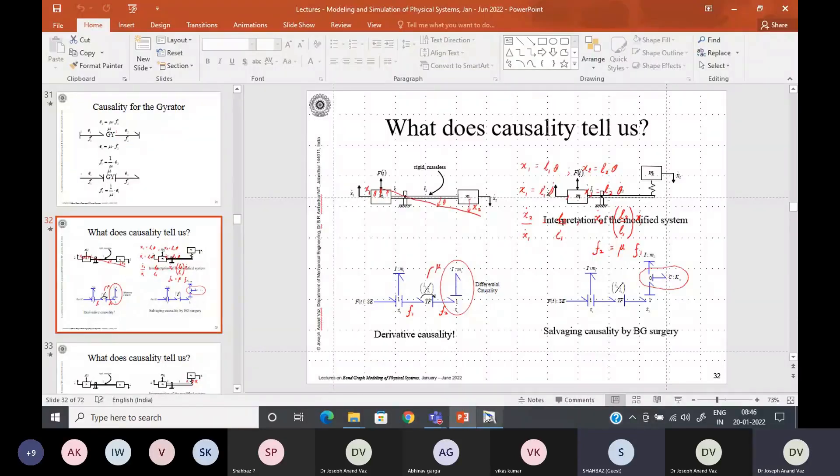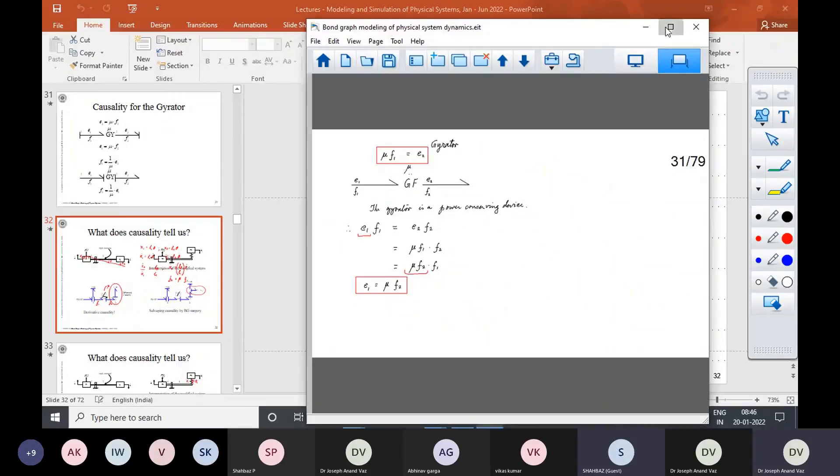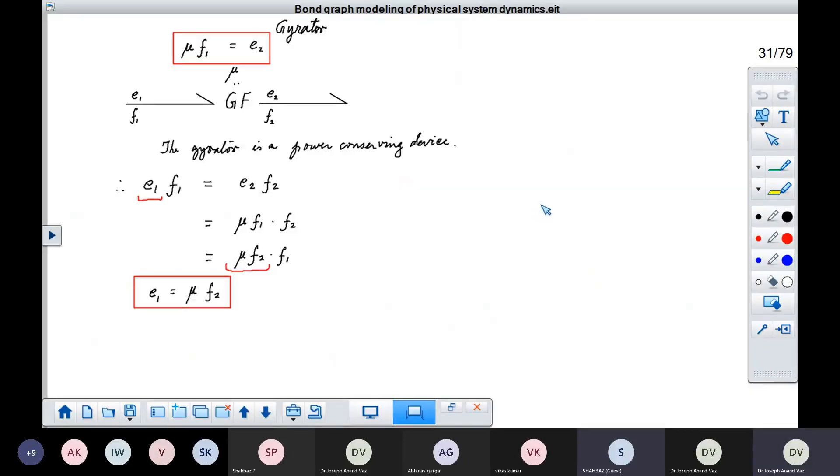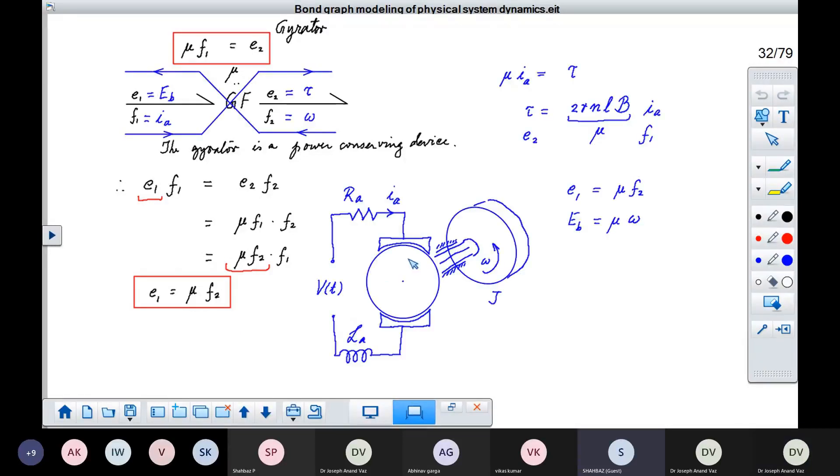Today, we will proceed with some examples. So, this was about the gyrator. We saw how E2 is related to F1 by E2 equal to mu F1 and how E1 is related to F2 by E1 equal to mu F2. And this is obtained because of the power conserving nature of the gyrator.